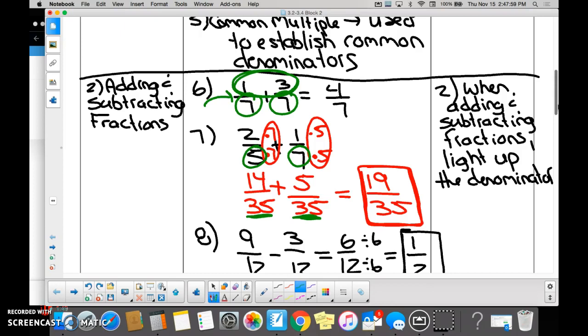And after we have 35 written down, we make our boxes, and then you figure out what the numerators are, right? And you guys came up with 14 and 5. So denominators are the same. What's 14 plus 5? 19. What's the denominator? 35.